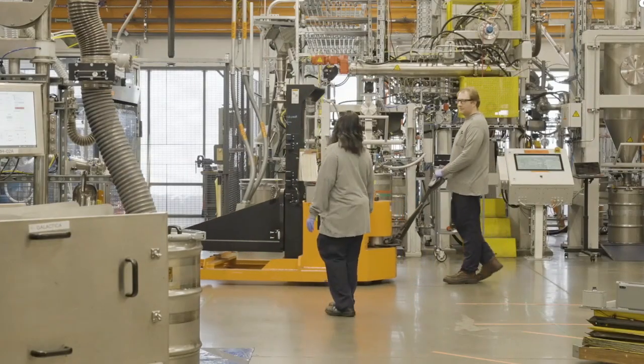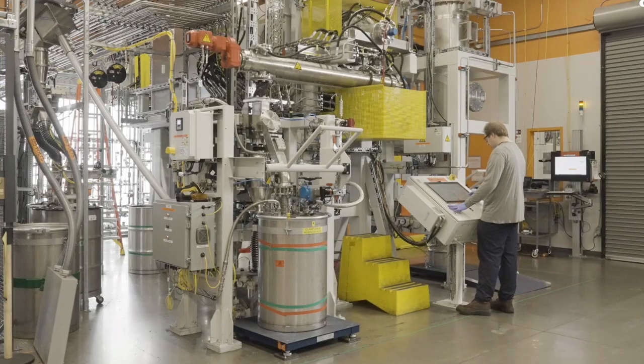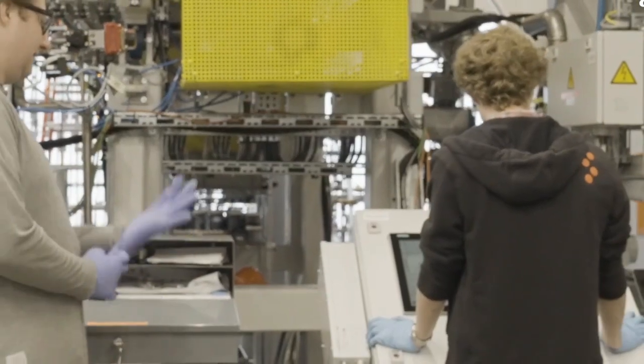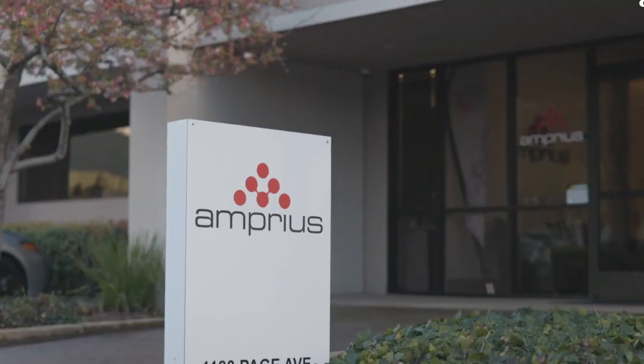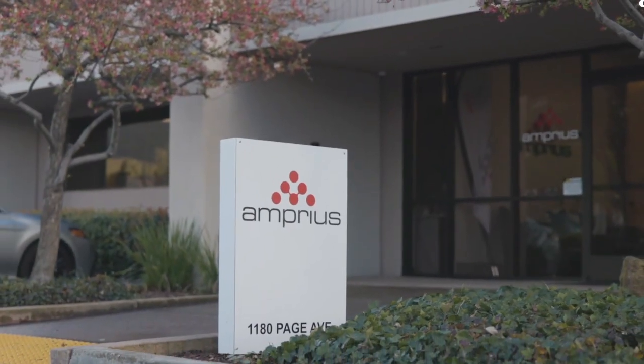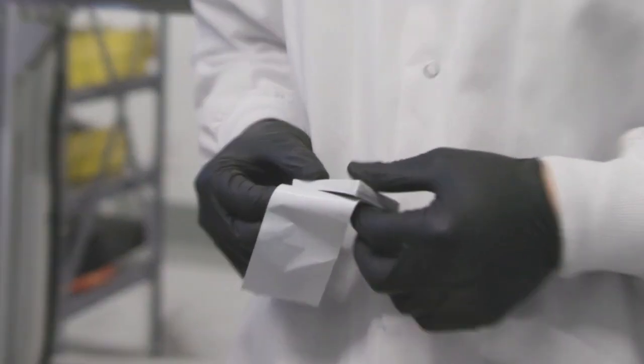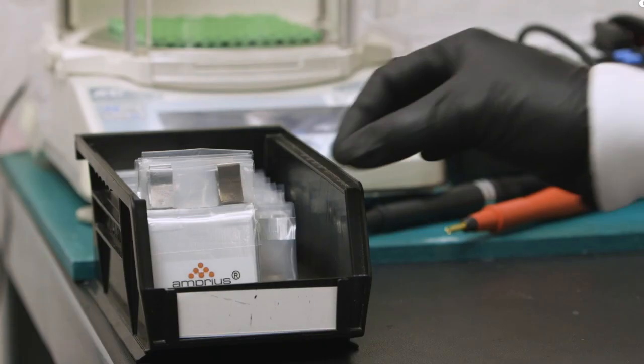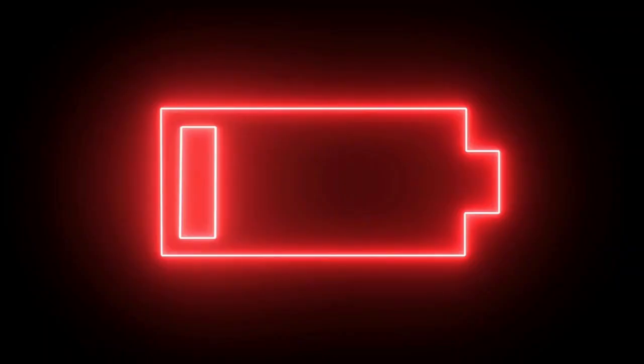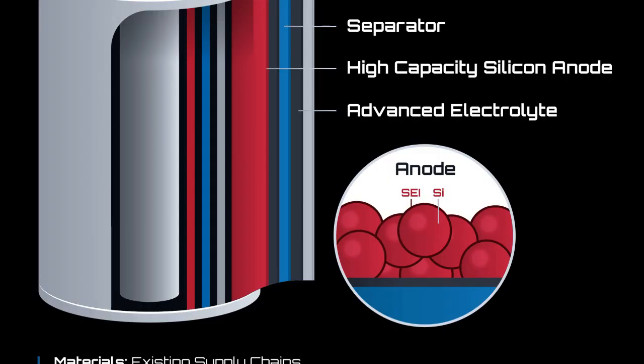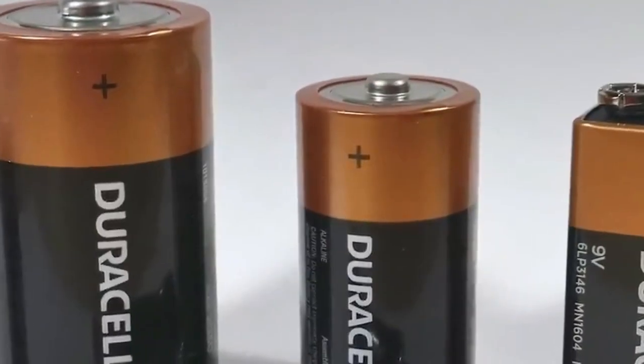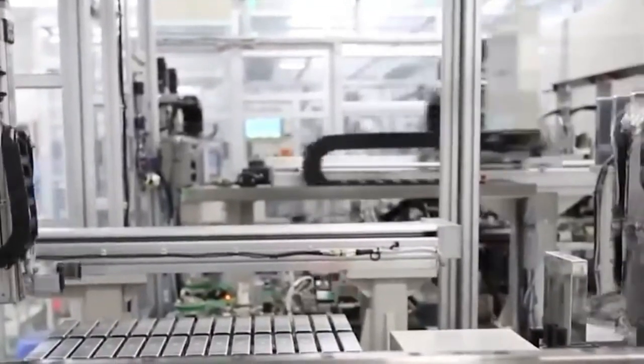When it comes to safety, silicon anode batteries incorporate various measures to ensure secure operation. These batteries feature a positive temperature coefficient (PTC) device that acts as a safeguard against high current surges. Additionally, a circuit interrupter is in place to open the electrical path when excessive charging voltage is detected. A safety vent is designed to allow gas to escape in the event of a rapid pressure increase within the cell. External to the cells, an electronic protection circuit includes a solid-state switch that opens at a voltage threshold of 4.30 volts. Moreover, to prevent any potential hazards, a fuse cuts off the current flow when the exterior temperature reaches 90 degrees Celsius. These safety features provide peace of mind and ensure the reliable and secure operation of silicon anode batteries.